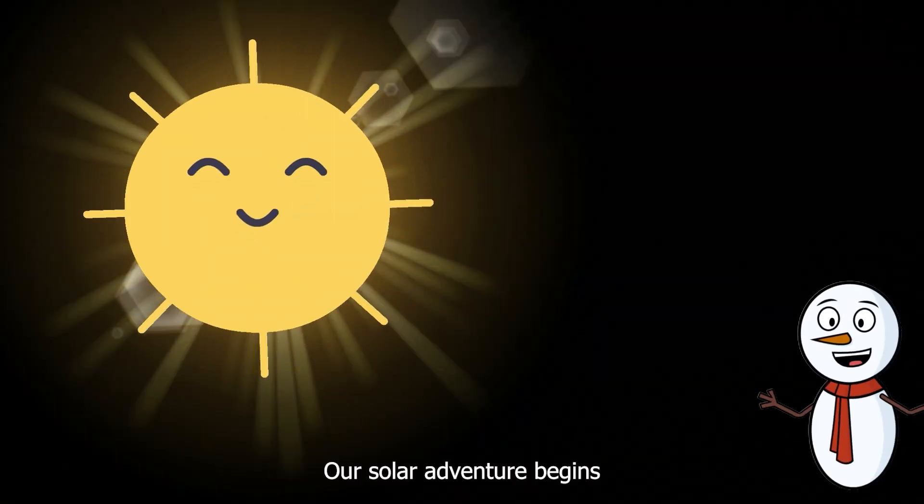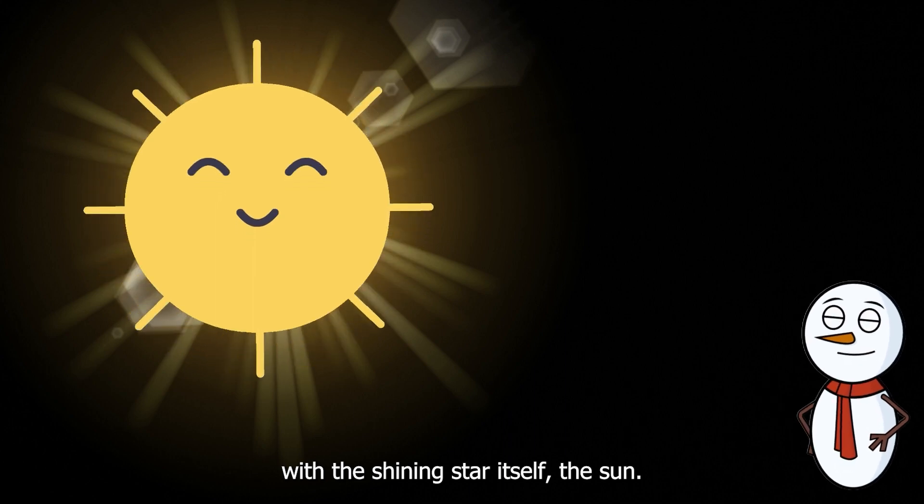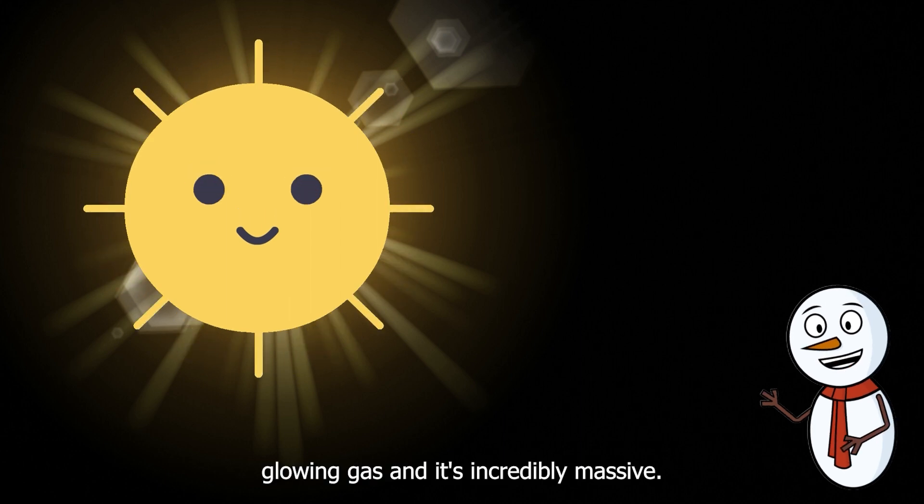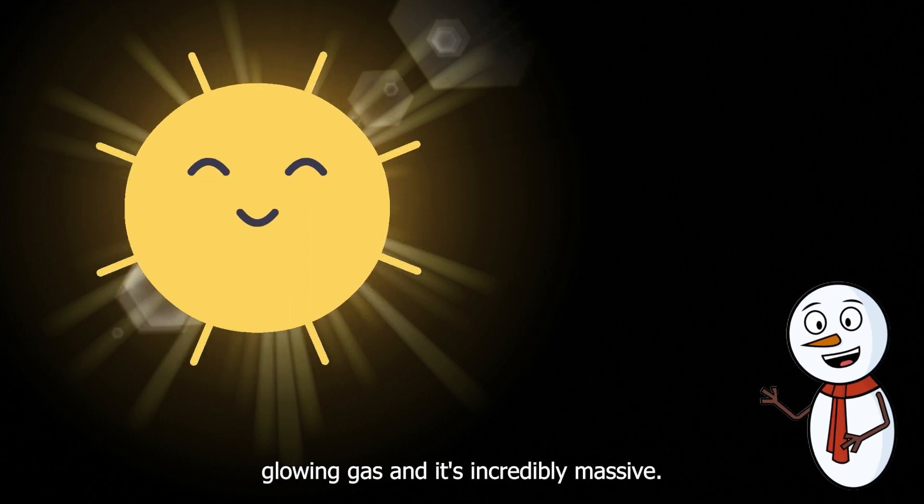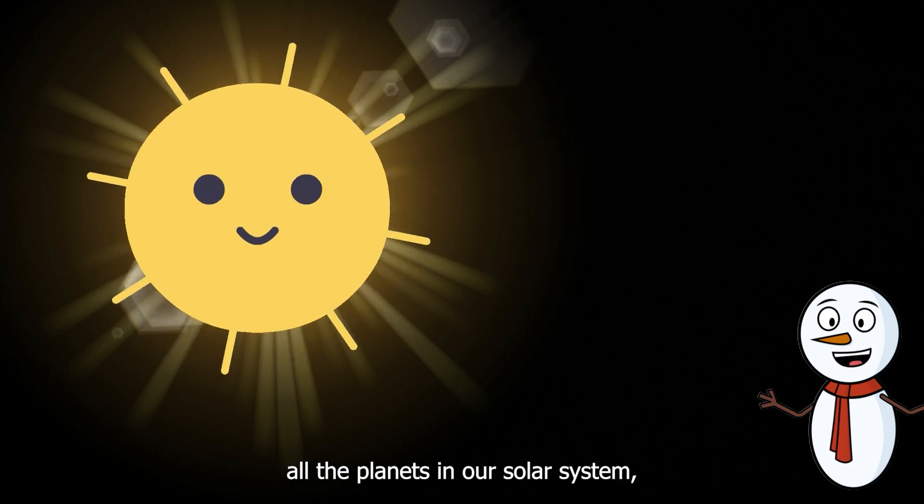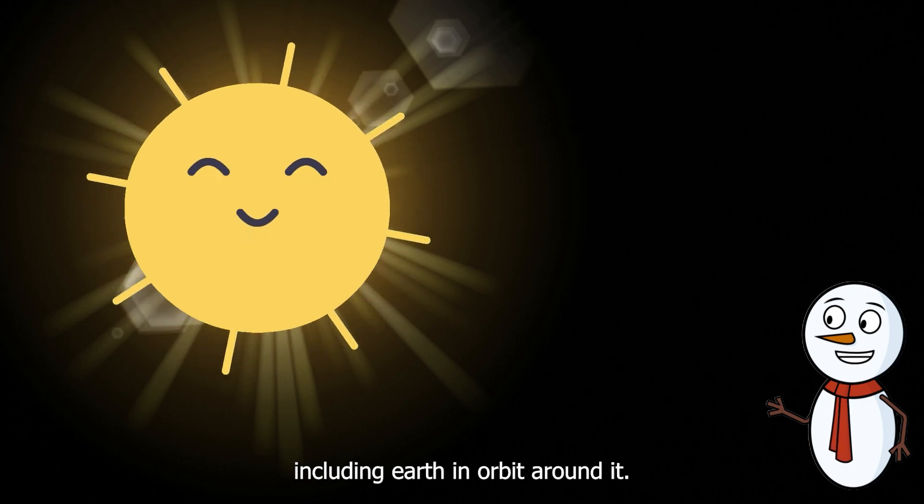Our solar adventure begins with the shining star itself, the Sun. The Sun is like a giant ball of hot, glowing gas, and it's incredibly massive. It's so massive that it keeps all the planets in our solar system, including Earth, in orbit around it.